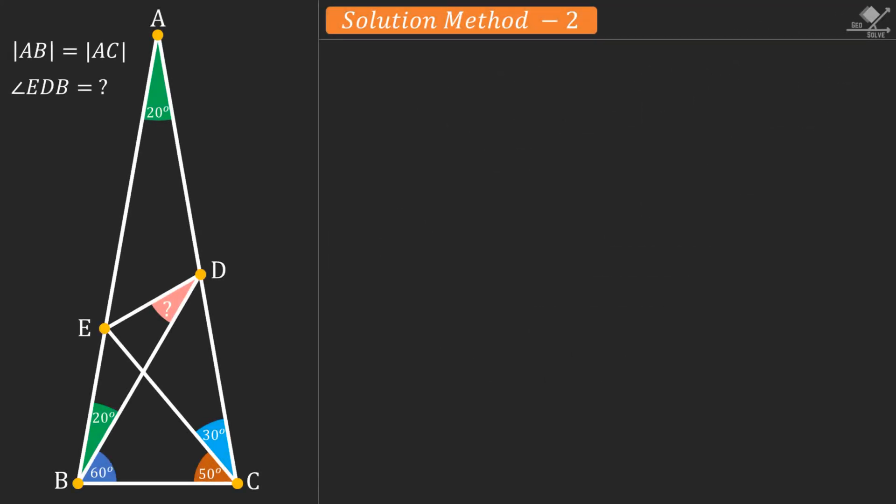Now let's start our second solution method for Langley's problem. First, we can easily calculate this angle to be 50 degrees. Now let's call this angle as A. Then our missing angle will be 110 minus A.